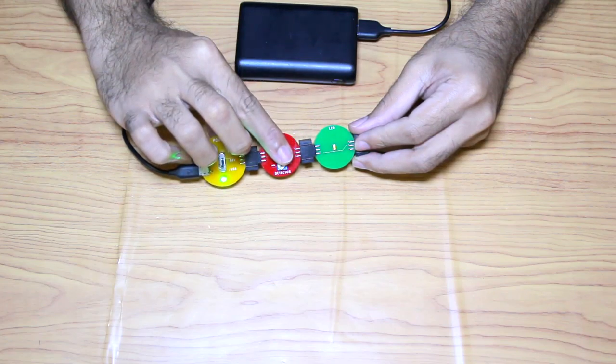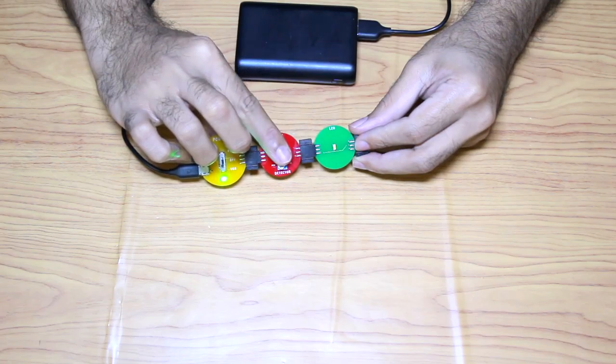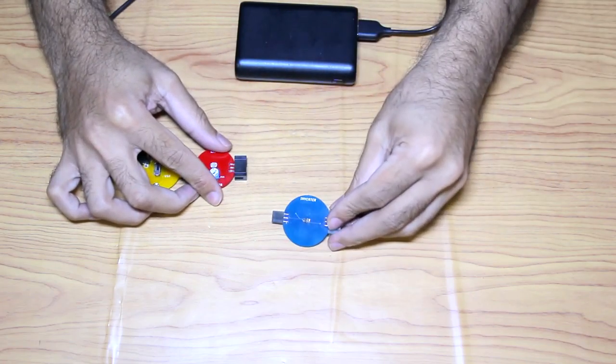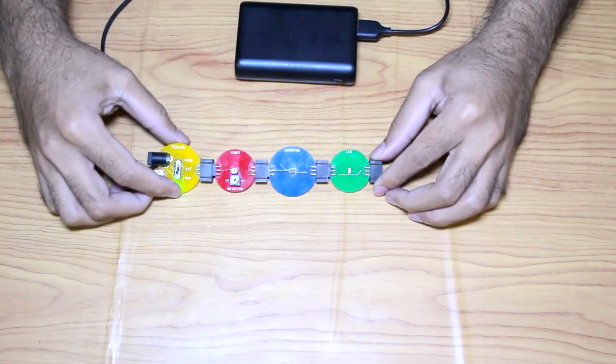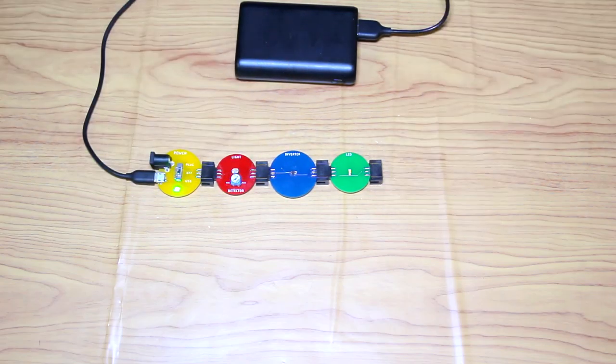When it gets light, the light detector unit turns the LED on. But what we want is for the LED unit to turn off when there is no light or when there is little light. So let's use an inverter unit to get this done.